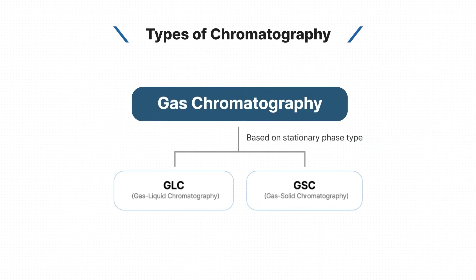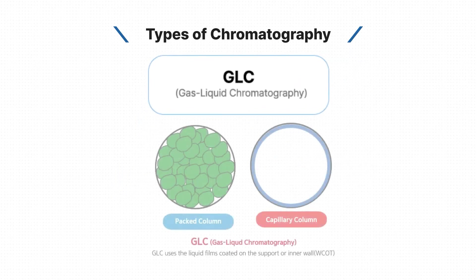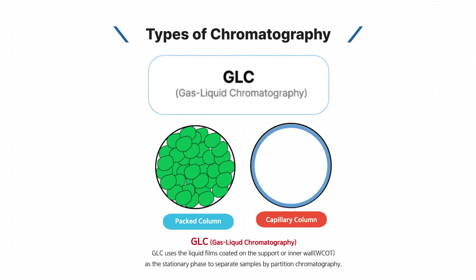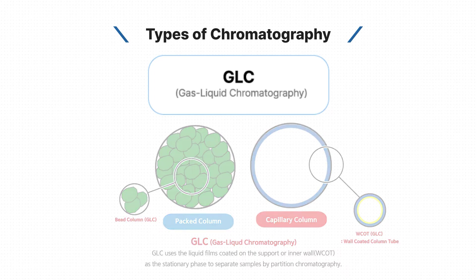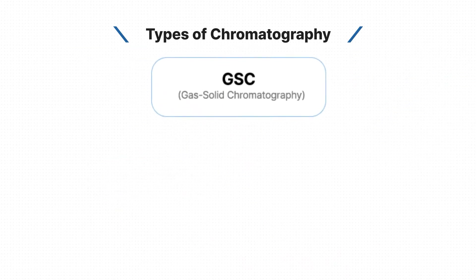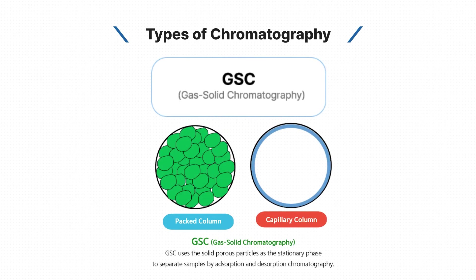GC can be classified into two types: GLC and GSC. GLC, gas liquid chromatography, uses liquid films coated on the support or inner wall as the stationary phase to separate compounds by partition chromatography. GSC, gas solid chromatography, uses solid porous particles as the stationary phase to separate compounds by adsorption chromatography.